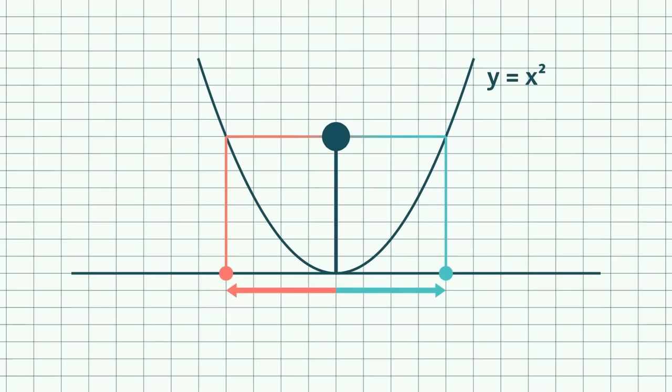Now extend the vertical line from both points up until they touch the parabola. Connect the two points on the parabola with a straight line.